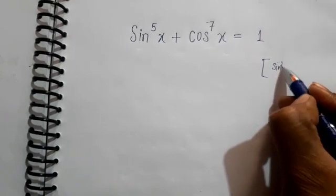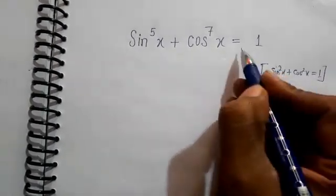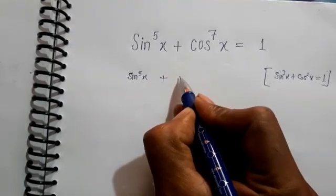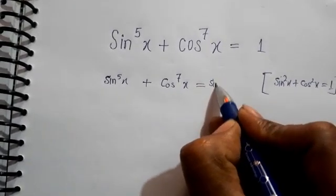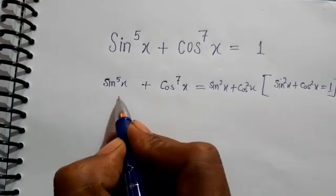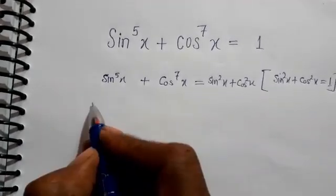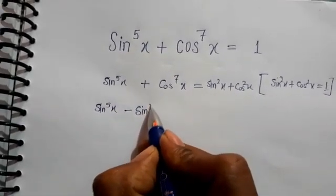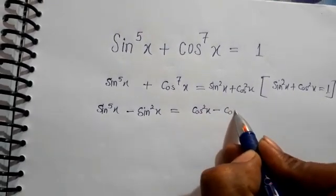We know that sin²x + cos²x = 1. I'm going to put this identity over here. So we have sin⁵x + cos⁷x on the LHS side, and I'm putting sin²x + cos²x equal to 1 on the RHS. I'm putting all similar quantities together: sin⁵x with sin²x, and cos²x with cos⁷x.